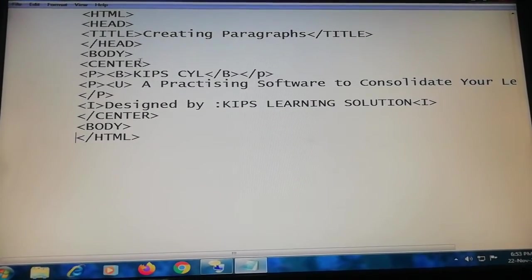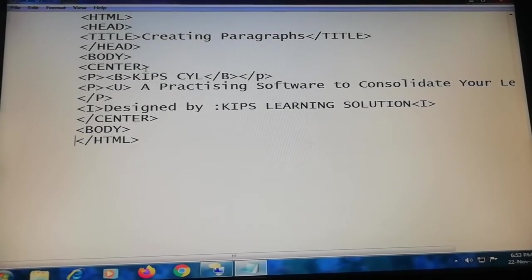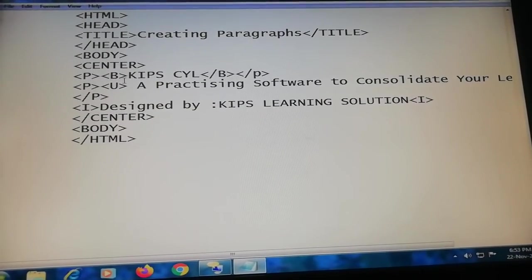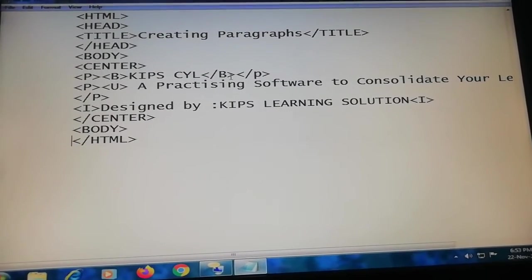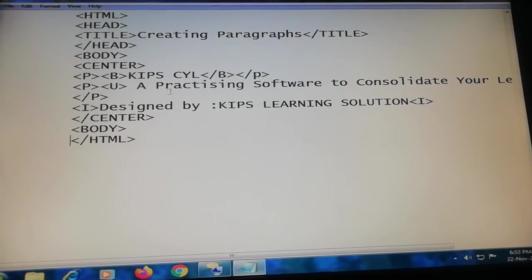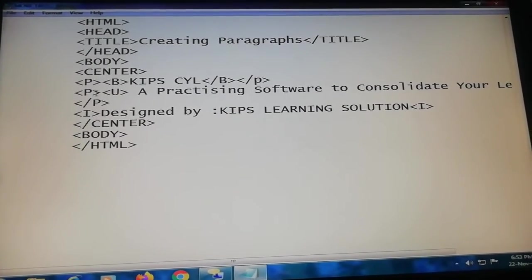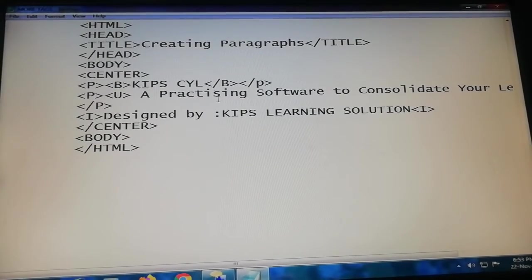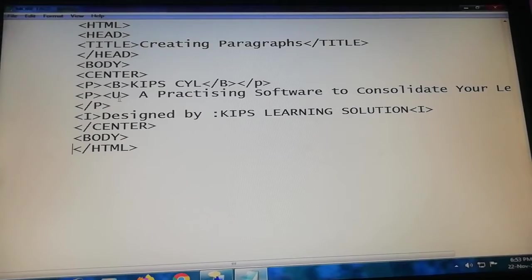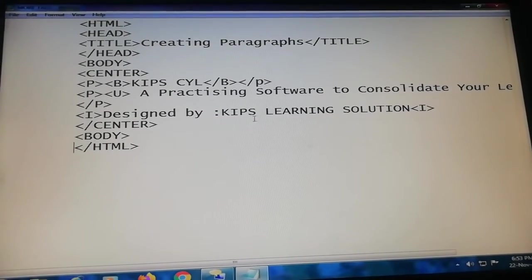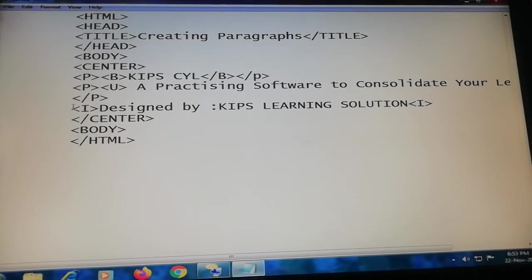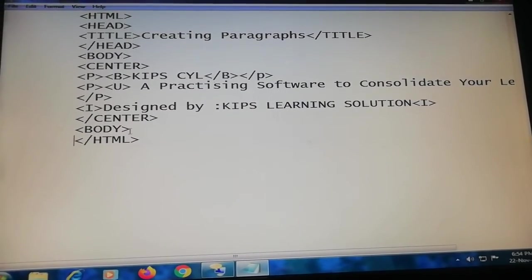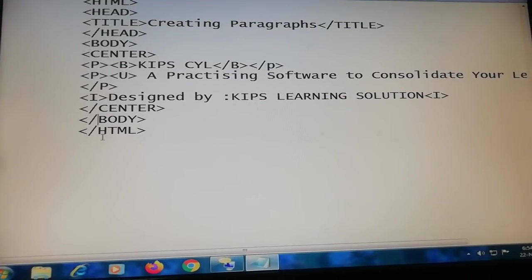Then body tag will start. And center tag will take the pointer at the center of the web page. Then paragraph tag and bold tag are used, due to which these words will appear in bold style. In the next line the paragraph will change, and this line we will see with the underline because here underline tag is used. And this line you will see in italic style because we have enclosed it in the italics tag. Then the center tag is closed, and body tag is closed as the HTML tag is closed.